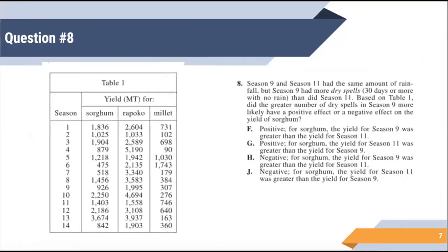Try question eight. All right. Question eight's a little bit long. It talks about seasons nine and 11. So we've got season nine here and season 11 here. And they say they had the same amount of rain, but season nine had more dry spells. Based on table one. Here we are at table one. Did the more dry spells in season nine have a positive or negative effect on the yield of sorghum? So we're looking at sorghum and we're comparing season nine, which was 926 and season 11, which was 1403. And they say there were more dry spells in nine. Was that good or bad for the sorghum? 926 is lower than 1403. So that means that less sorghum grew when there were more dry spells. So it was negative for the sorghum. So our answer for eight should be J. It was negative. The yield for season 11 was greater. And there were fewer dry spells. We grew more sorghum.